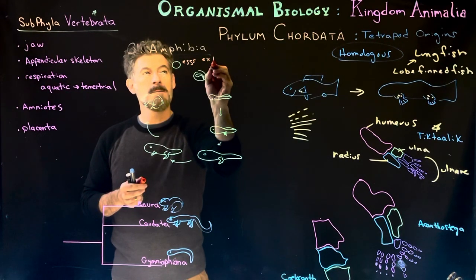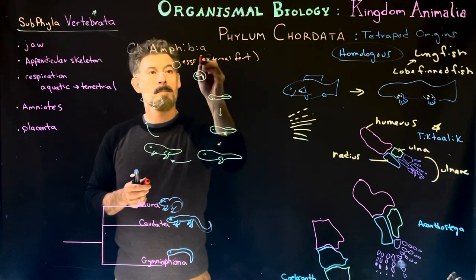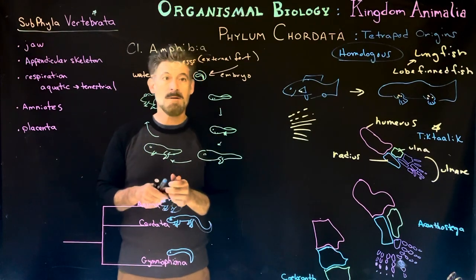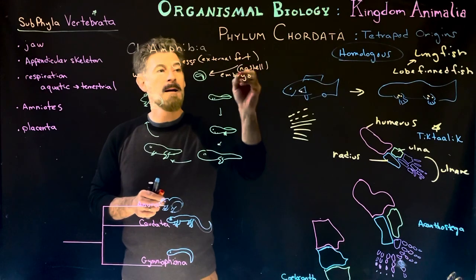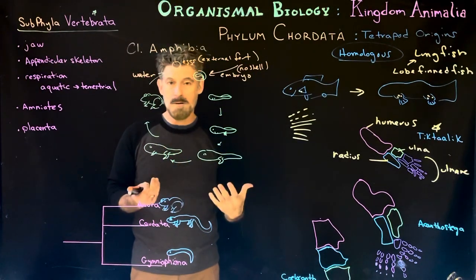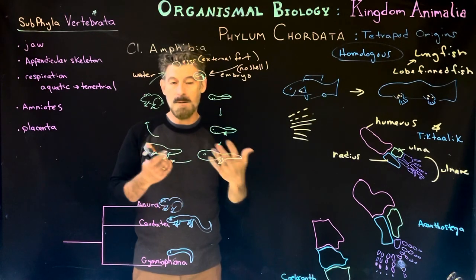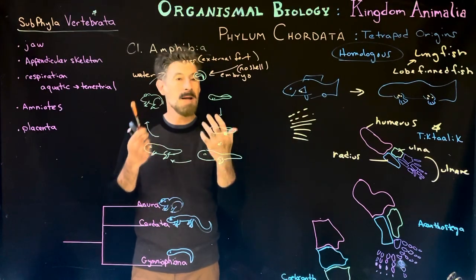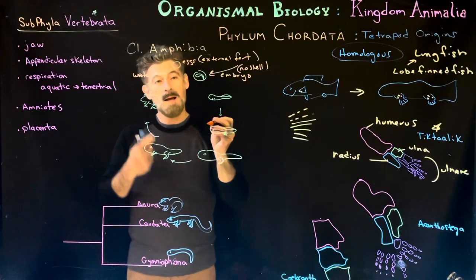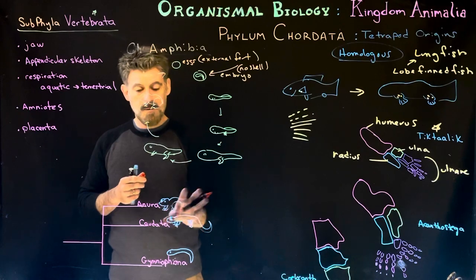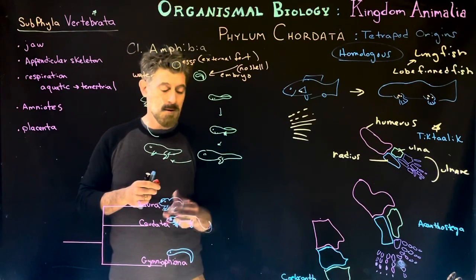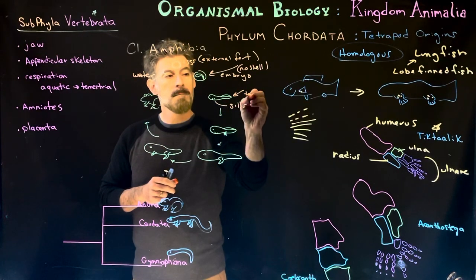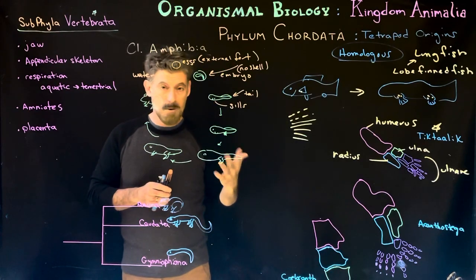Typically we have external fertilization, and then we start to develop an embryo. This egg has a gelatinous coat around it — it does not have a hard shell. They have to develop in water: a pond, a lake, or some collected puddle associated with another organism. As they develop — and this is true for most members of the group — they develop gills and a tail. These are some of the common chordate characteristics: pharyngeal gill slits, a notochord that was later rearranged into vertebrae, the post-anal tail.